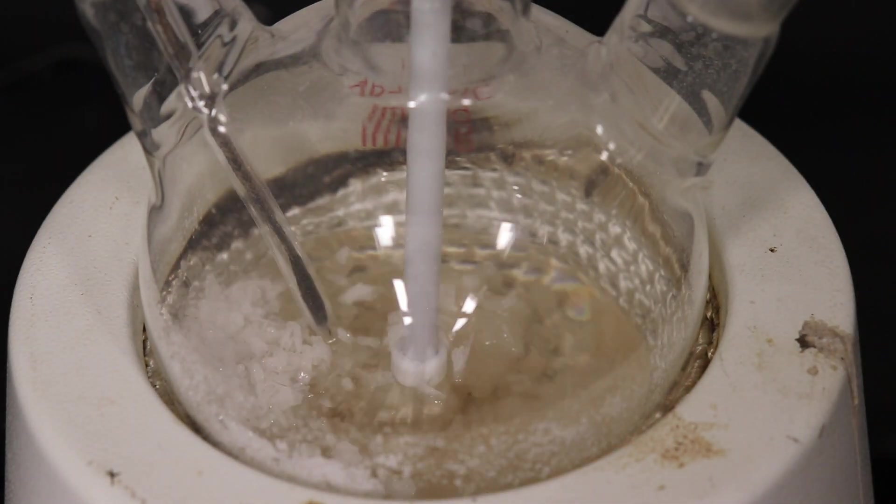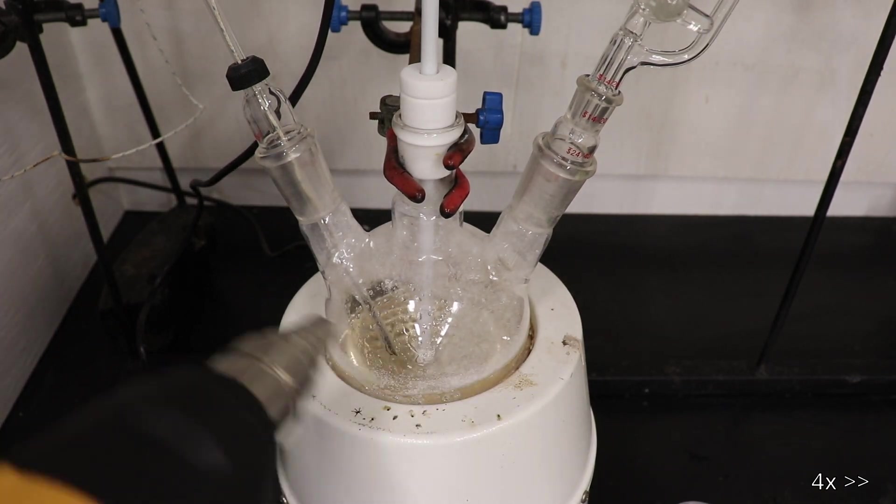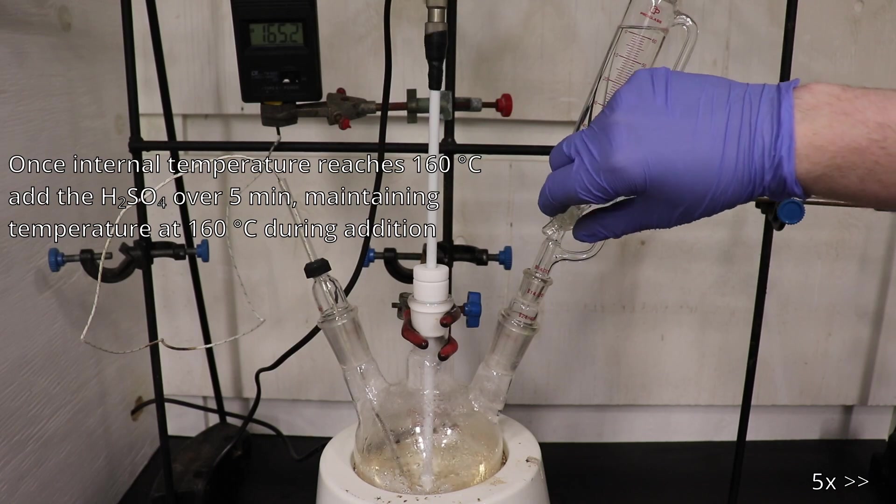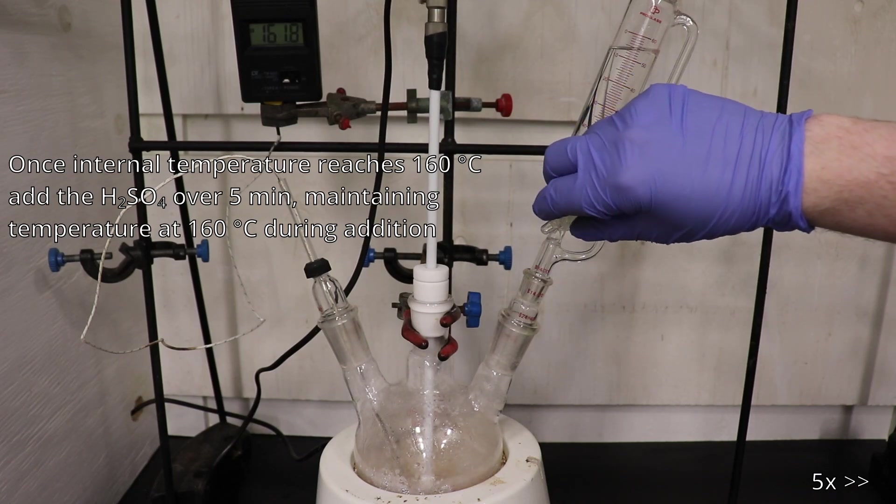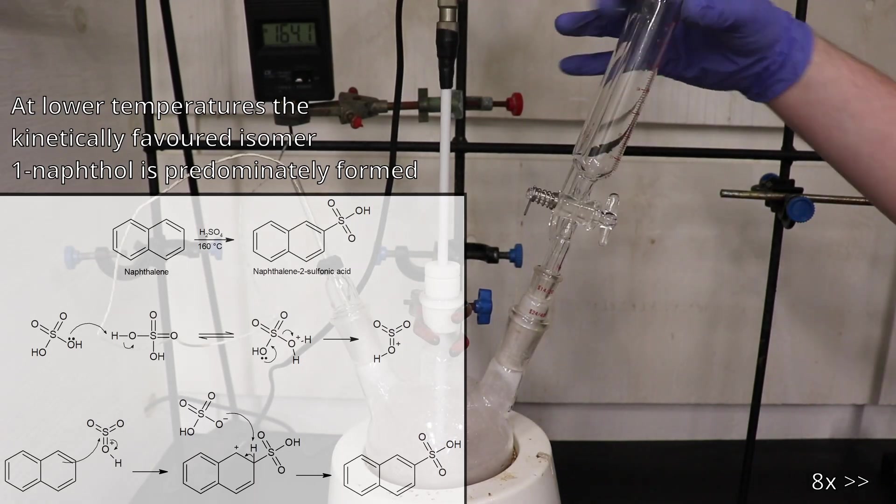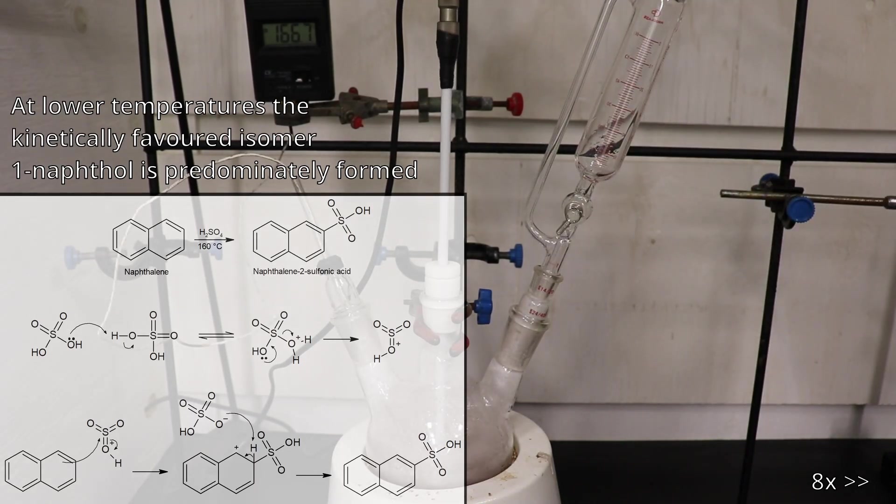The molten naphthalene sublimed, depositing on the walls of the flask, so it was melted back down with a heat gun. Then the 166 grams of concentrated sulfuric acid had to be added to the molten naphthalene over the course of five minutes while maintaining the temperature at 160 degrees Celsius.